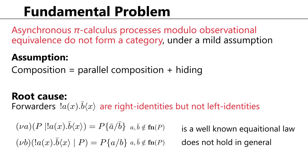So what is the assumption and what causes the problem? We assume that composition is defined by parallel composition plus hiding. The problem is that special processes called forwarders work as right identities with respect to composition, but they are not necessarily left identities. This means we don't get a category from observational equivalence, because in a category the right identity must also be a left identity.